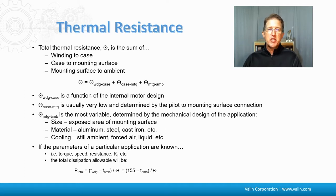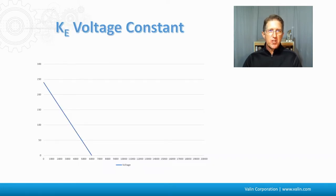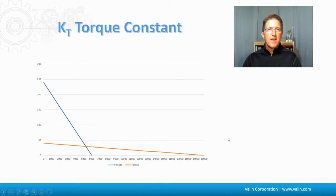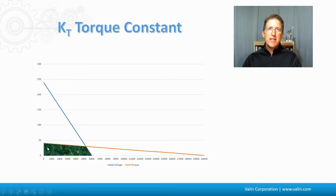If the parameters of a particular application are known, you end up with a particular equation. If we graph the KE voltage constant for a particular motor, you might have 250 ounce-inches of torque and a speed of maybe 6,000 RPM — that's what the KE voltage defines. The KT torque constant defines where you get really high speed but lower torque. What the motor is capable of is the overlap and intersection of the two. The continuous capability is defined by the KT torque constant thermally, but limited by the voltage properties. This is what can be done all day, every day — the 100% duty cycle.